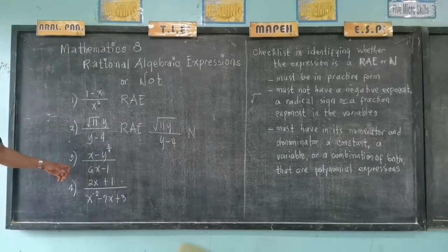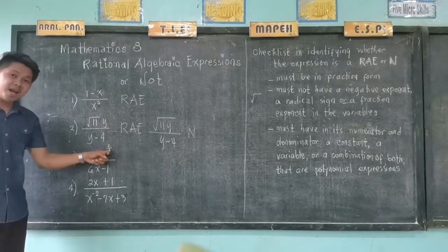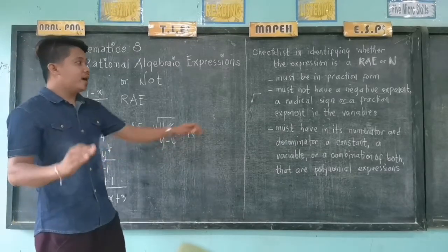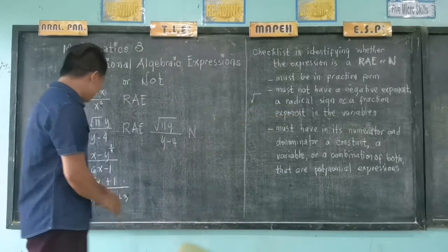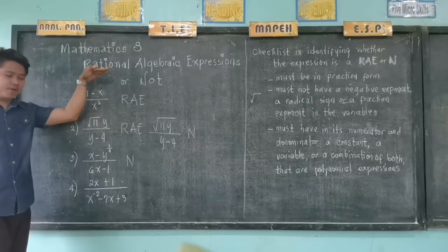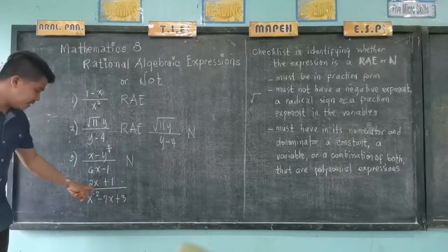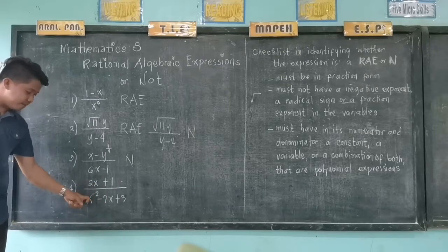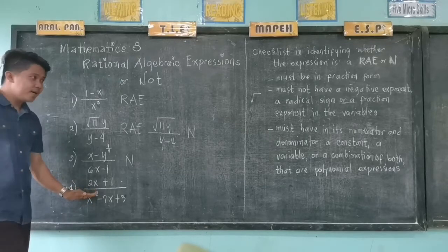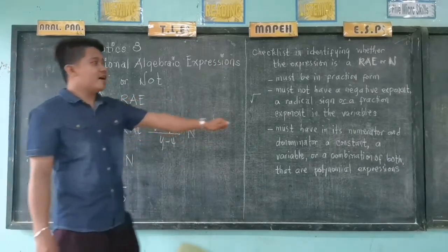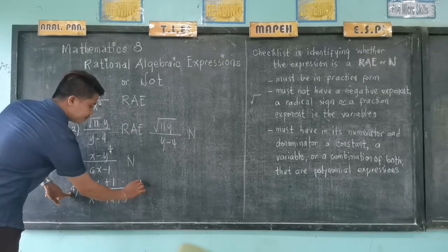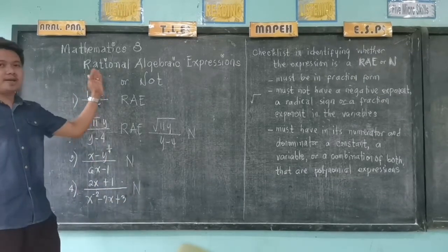Number three is very clear — it has a fraction exponent. As I said, it must not have a fraction exponent. So, therefore, this is not a rational algebraic expression. In number four, as you can see, in the denominator we have a negative two as the exponent. Again, it must not have a negative exponent. So, therefore, number four is not a rational algebraic expression.